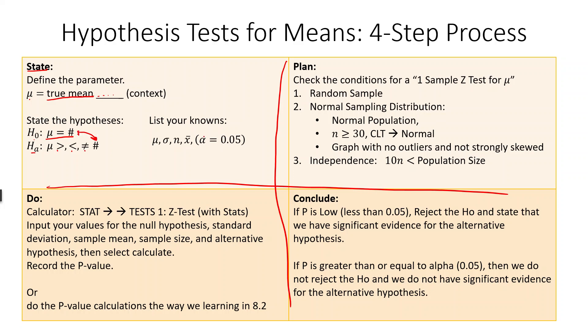Then we're going to list anything we know. So we've already listed the mean. We're going to list the standard deviation, sample size, sample mean, and we're probably going to state that alpha equals 0.05, unless we're told otherwise.